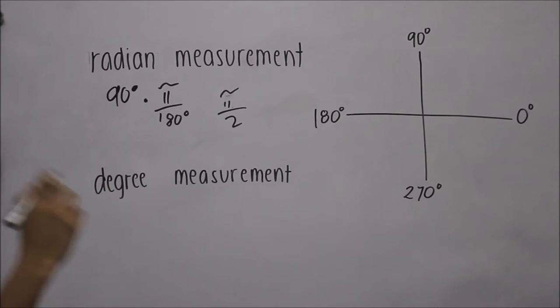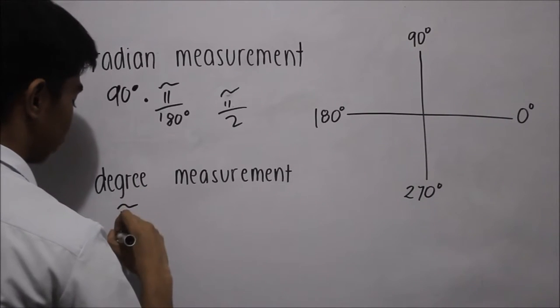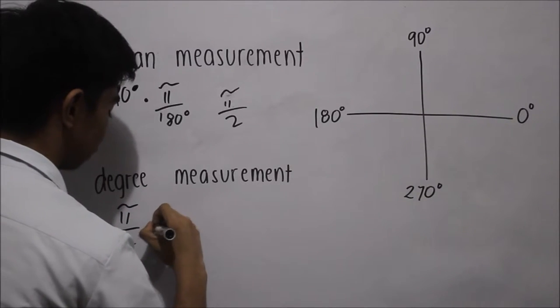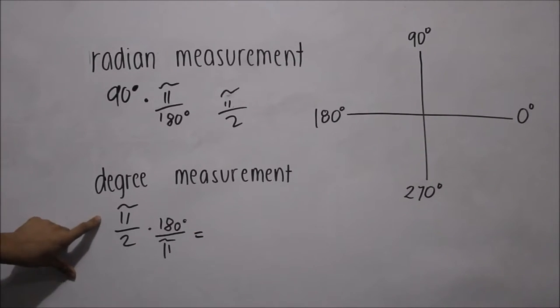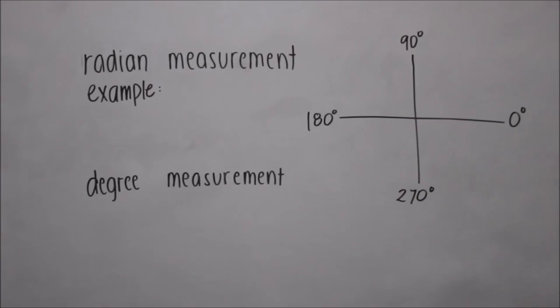To convert back the radiant measurement to degree, we need to multiply by 180 over pi. Pi over 2 times 180 over pi is equal to 90 degrees. Let's give another example.